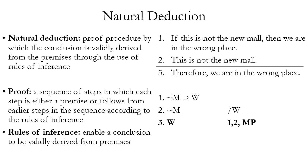Rules of inference enable us to derive a conclusion validly from premises. A rule of inference leverages the fact that an argument of one logical form is going to be valid regardless of the particular instantiation of that form. So all arguments that share the same logical form are equally valid. Some common logical forms are given names and rules within our natural deduction system, like modus ponens or MP.